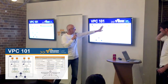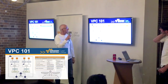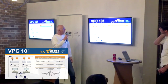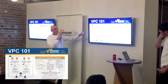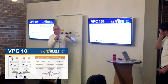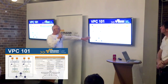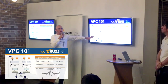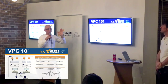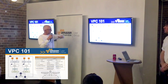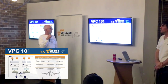Security groups are additive — everything adds up. With a NACL, it's the first matching rule wins, going from the top down, just like an IP table.